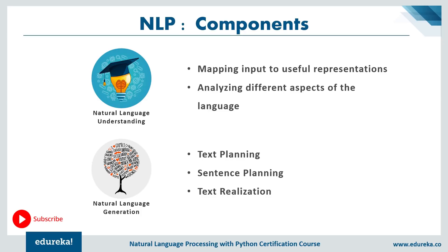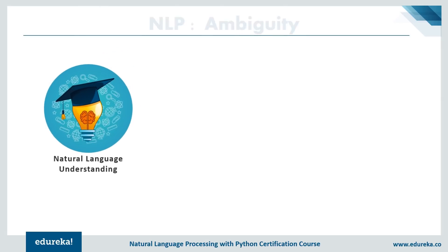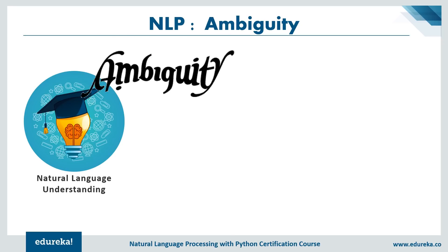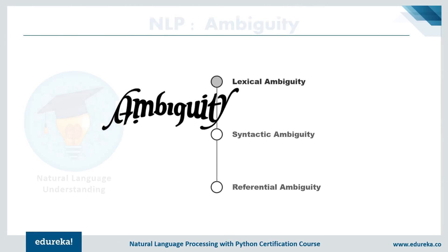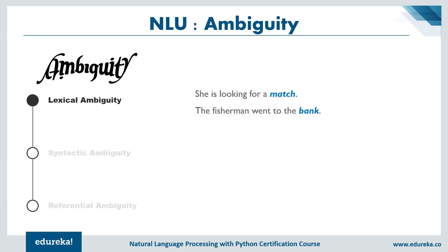Even a small child can understand language, so let's see what difficulties a machine faces. Understanding a language is very hard. In English, there are ambiguities at different levels. Lexical ambiguity is the presence of two or more possible meanings within a single word, also called semantic ambiguity. For example, 'She is looking for a match' — is she looking for a partner, or a cricket match? Similarly, 'The fisherman went to the bank' — is it a financial bank or a river bank?